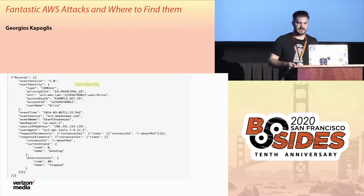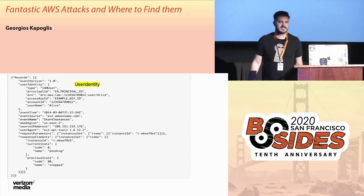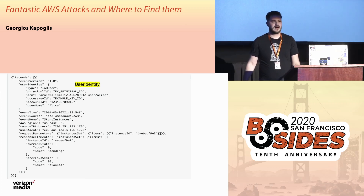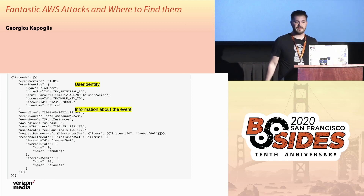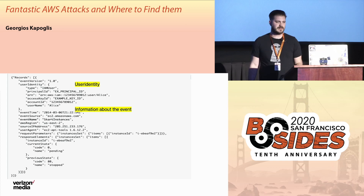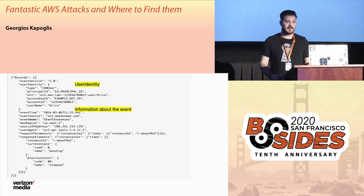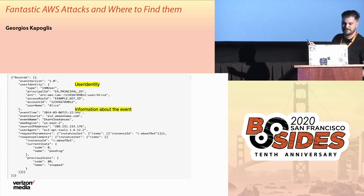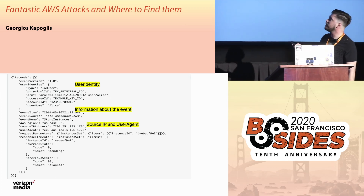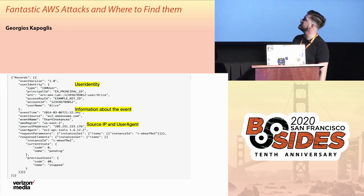Here's what a CloudTrail log looks like. In the beginning, we have the user identity — the entity that performs any action. Then we have additional information about the event, like the source service such as EC2, and the event name, which says what action happened. Really important for attribution is the user agent and the source IP address. I've actually been able to attribute specific activity back to pen testers through just a unique user agent — it was that simple.